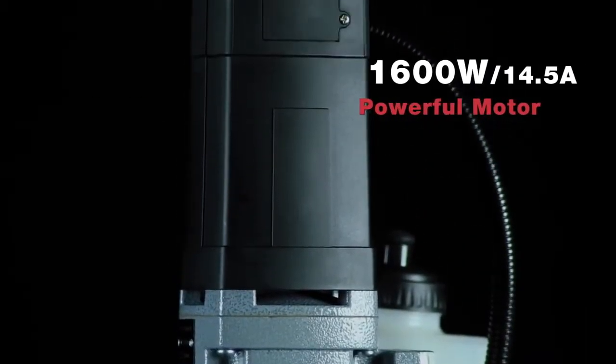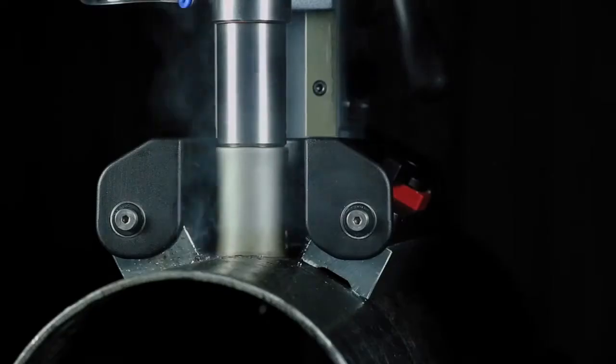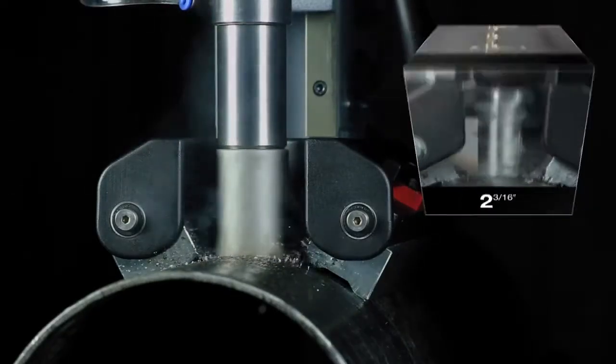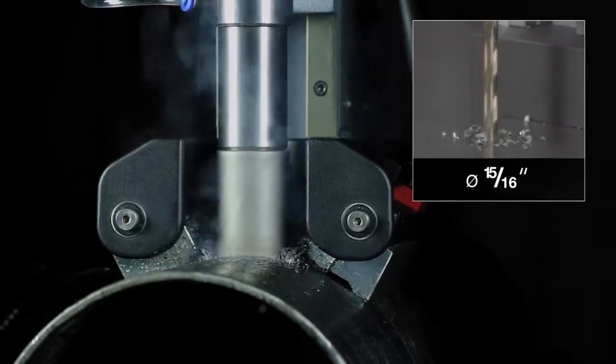Powerful motor of 1600 watts. Annular cutting up to 55 millimeter diameter. Twist drilling up to 23 millimeter diameter.